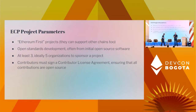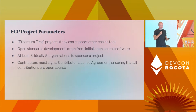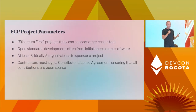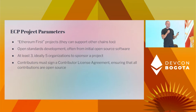What do we look for in an EEA community project? Ethereum-first projects — Ethereum should be central to the project, although it doesn't have to be exclusively Ethereum and can support other chains. We look for projects that want to do open standards development, often from initial open source software. There can be a software implementation around which a standard is developed, or there can be no implementation and you just develop a standard first. It must be open — contributors must sign a contributor license agreement ensuring all contributions are open source with no patents associated. To start a project, we look for at least three and ideally five organizations to sponsor it, since one company cannot define a standard. A standard exists when multiple entities with competing interests get together and agree on something.